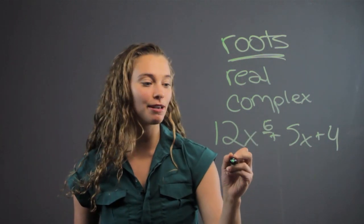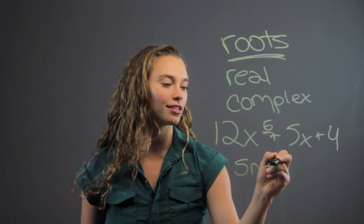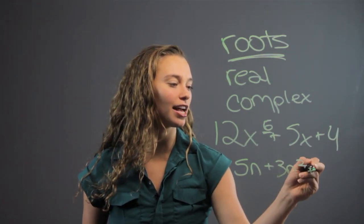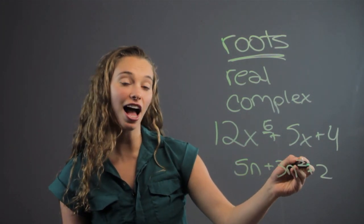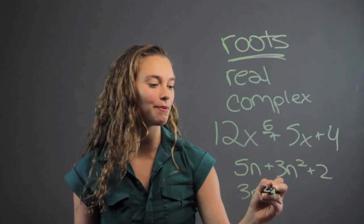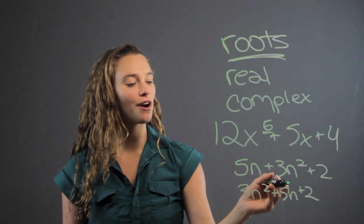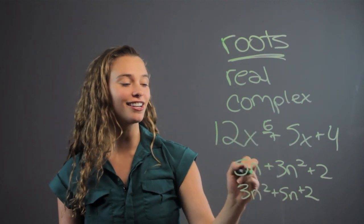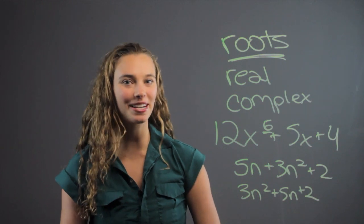It might not always be in order. It might be something like 5n plus 3n squared plus 2. This you'd have to put it in order and say, well, 2 is the highest exponent, right? So it's 3n squared when we put it in order plus 5n plus 2. And so we know this is a polynomial to the second degree, so there are two roots thanks to the fundamental theorem of algebra.